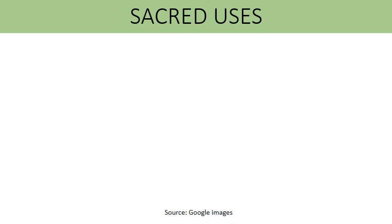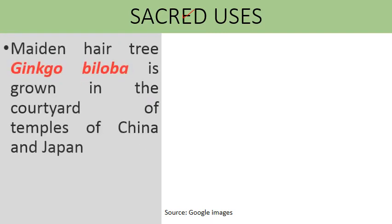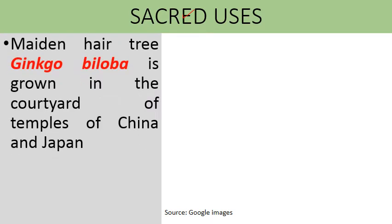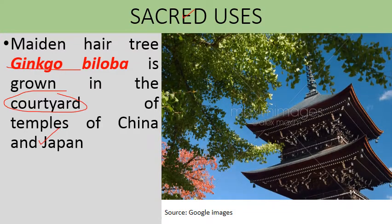Gymnosperms also have sacred uses for religious purposes. Ginkgo biloba, commonly known as the maidenhair tree, is grown in the courtyards of temples in China and Japan.